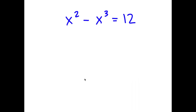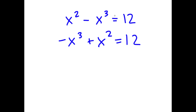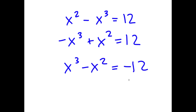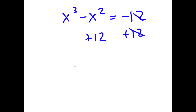In this problem, I have x to the power of 2 minus x to the power of 3 is equal to 12. I'm going to first rewrite this as negative x to the power of 3 plus x to the power of 2 is equal to 12. Then I multiply both sides by negative 1, so I get x to the power of 3 minus x to the power of 2 is equal to negative 12. Finally, I add 12 on both sides, so x to the power of 3 minus x to the power of 2 plus 12 is equal to 0.